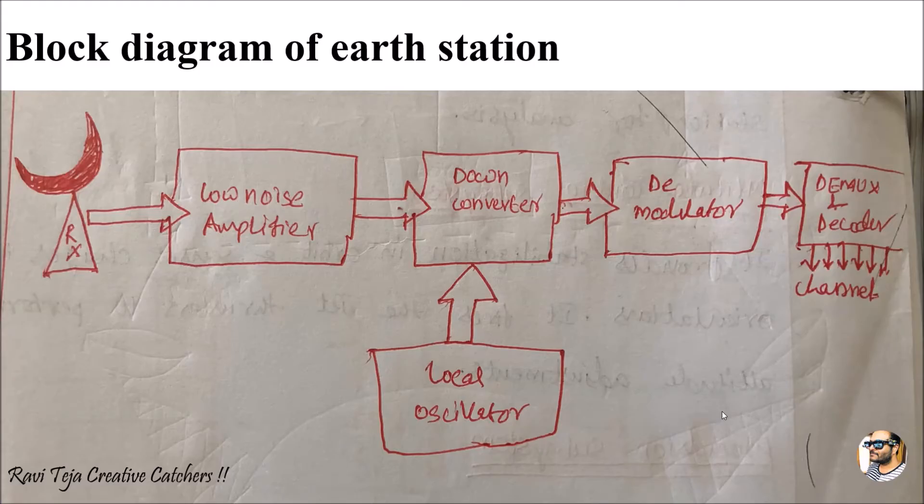Hello everyone, welcome to the course of Satellite Communication and Microwave Television. In today's topic we are going to discuss about the block diagram of Earth Station. The term Earth Station indicates a place with a huge antenna which is used to communicate with the satellites for several communication purposes.